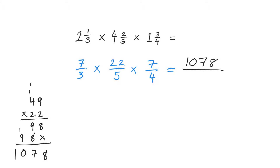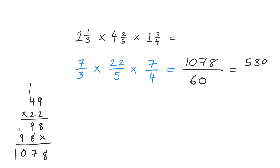The denominator: 5 times 4 is 20, 20 times 3 is 60, so the base becomes 60. Is this my final answer? No, because this can be simplified — both numbers are even, so I can divide both by 2. Half of 1000 is 500, half of 78 is 39, so 1078 divided by 2 is 539. And 60 divided by 2 is 30. So I get 539 over 30.